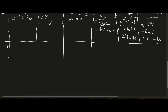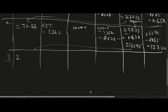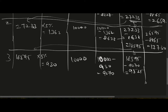For Year 3: opening liability is 18,595. Interest expense = 18,595 × 5% = 930. Lease payment is 10,000. Principal repayment = 10,000 minus 930 = 9,070. Ending liability = 18,595 minus 9,070 = 9,525.